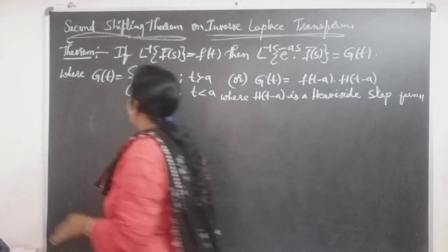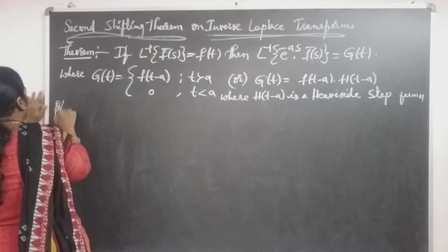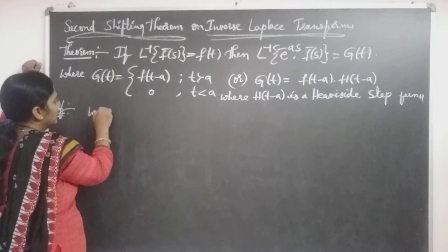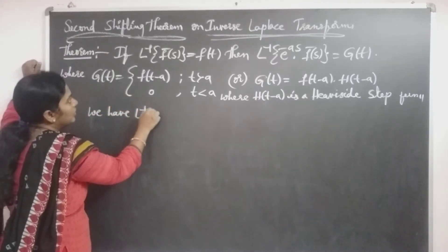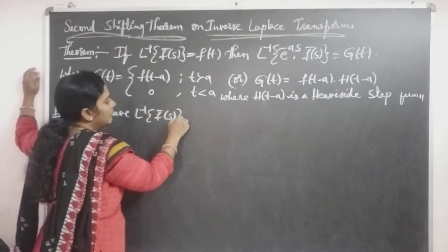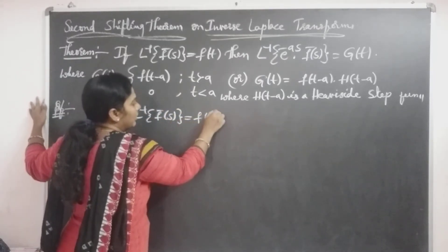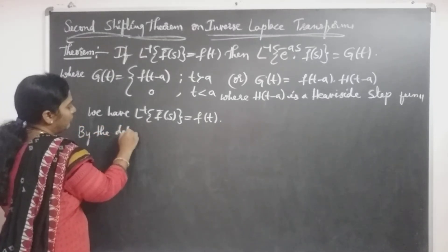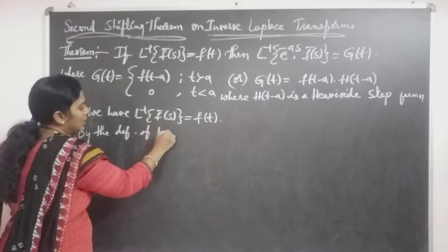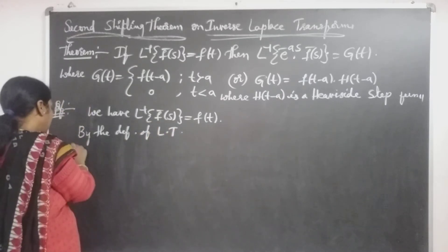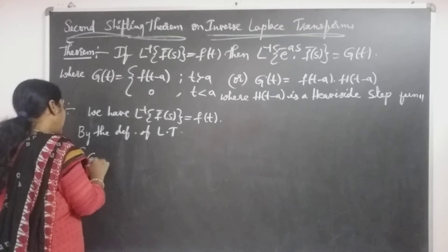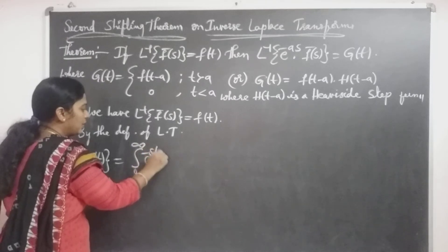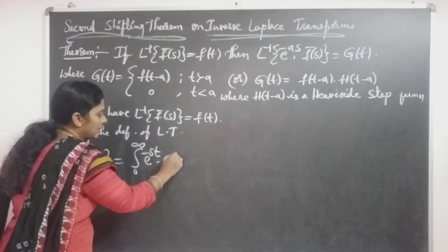How can we prove this theorem? The proof of the second shifting theorem: we have L inverse of f-bar of s equal to f of t. By the definition of Laplace transform, we find L of g of t, which equals the integral from 0 to infinity of e to the power minus s·t times g of t dt.